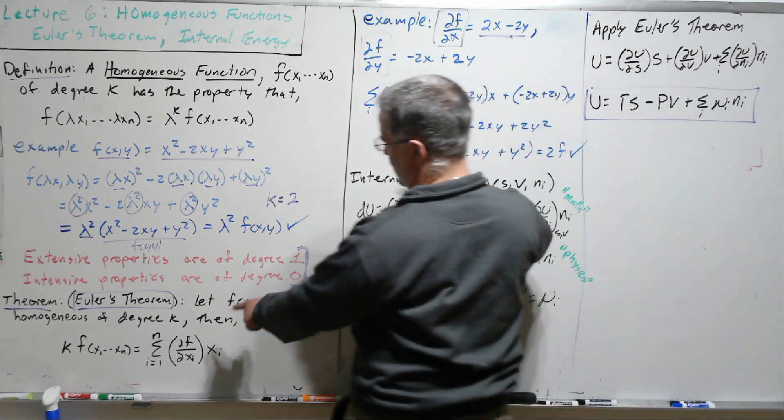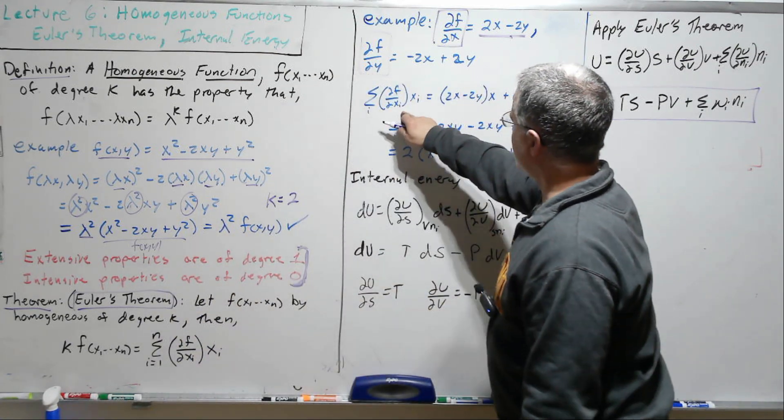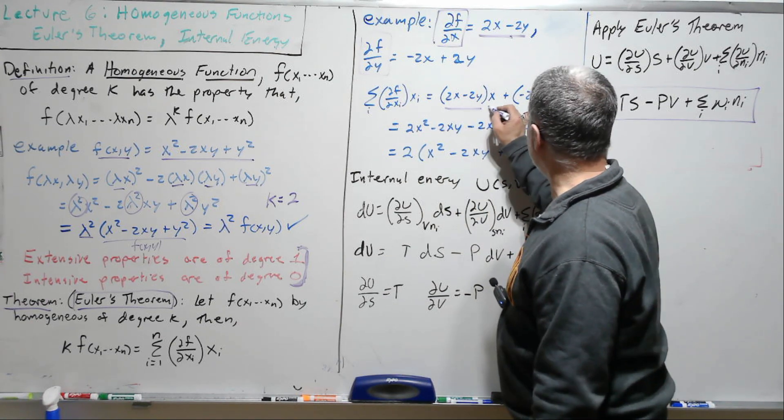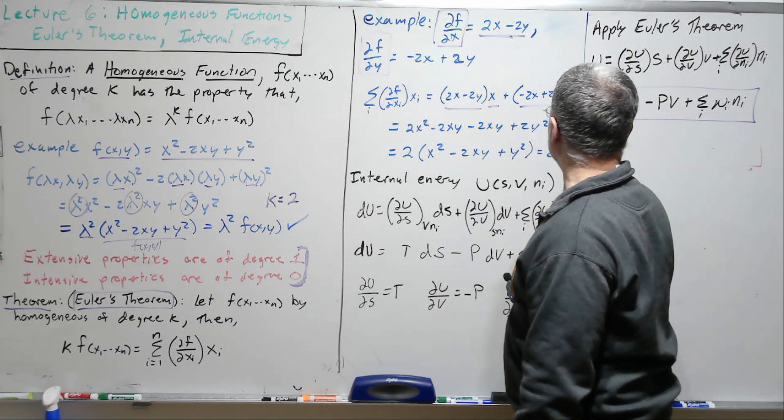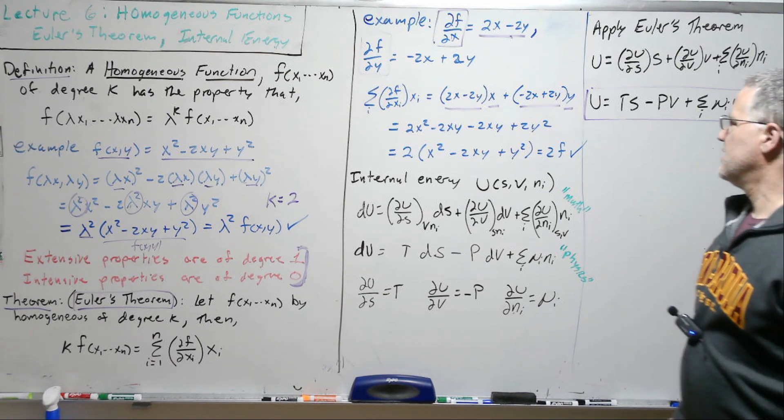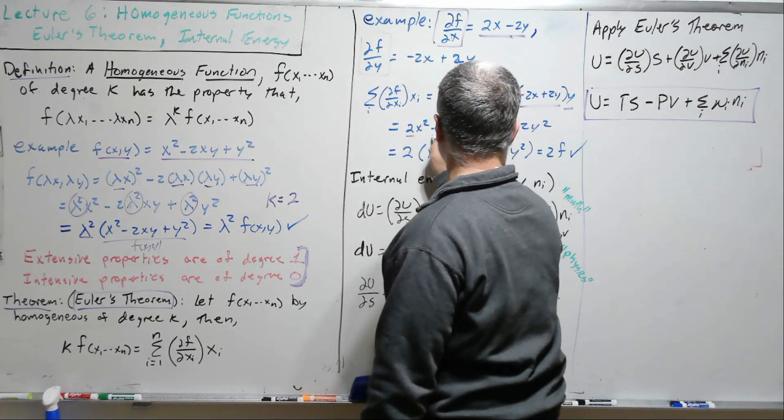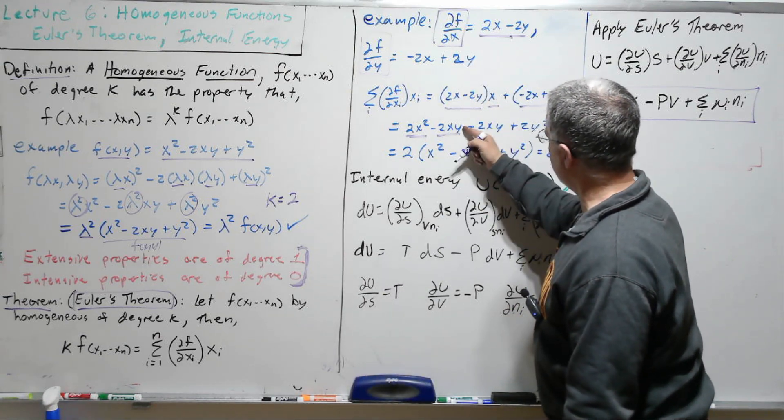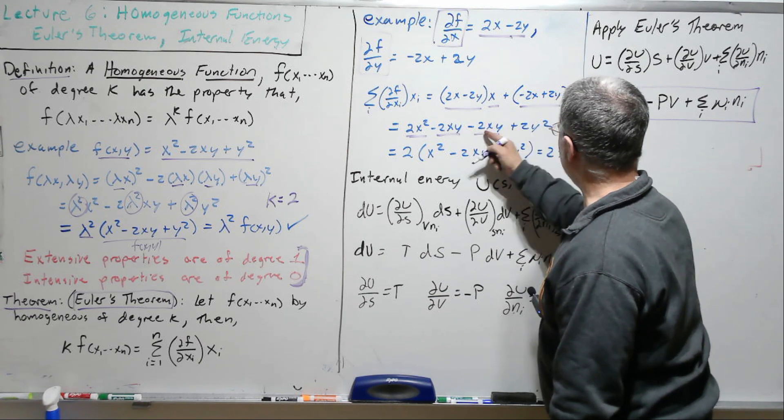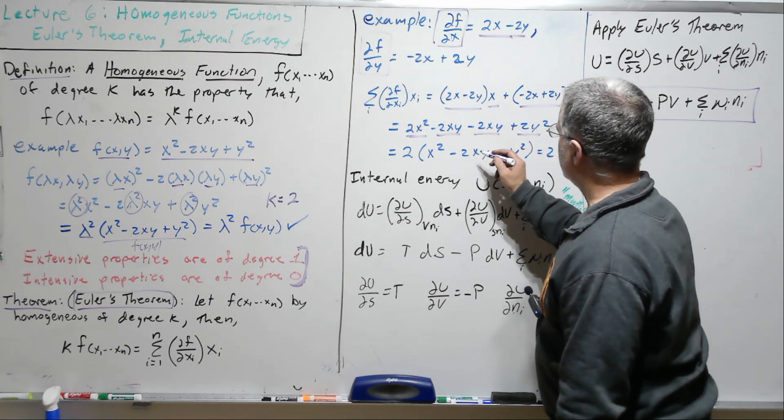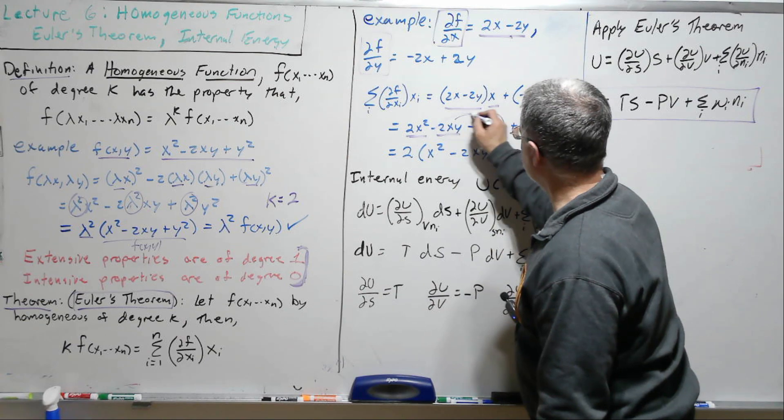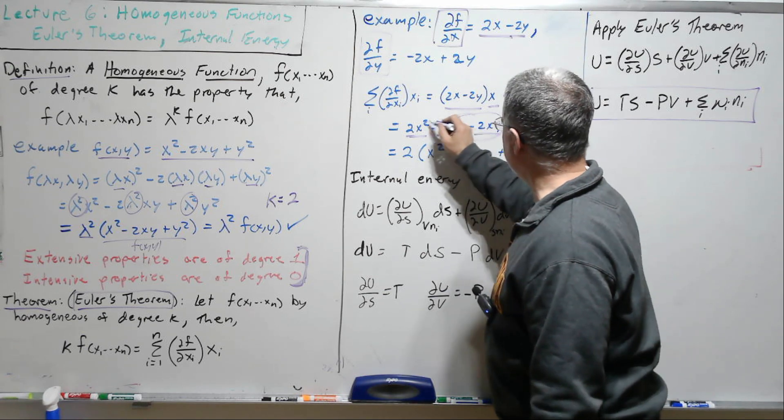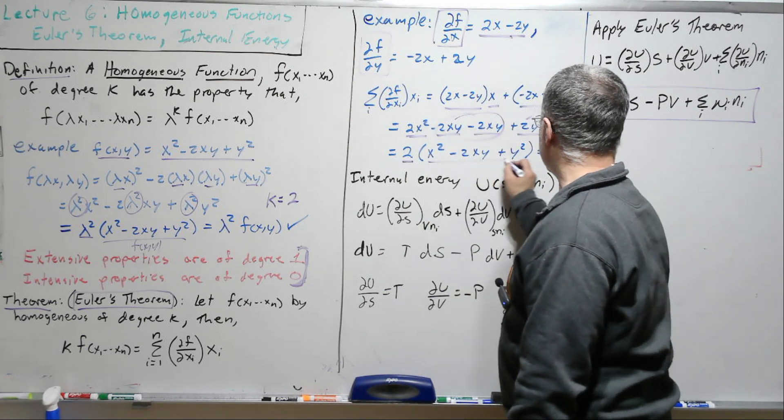So let's put this in the form of Euler's theorem, the right hand side of Euler's theorem. So we're going to take our df dx times x, df dy times y. And we get 2x squared minus 2xy. And then this distributes through to give us minus 2xy, 2y squared. So these two will combine together to be minus 4xy.